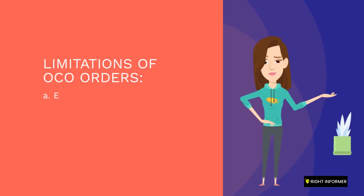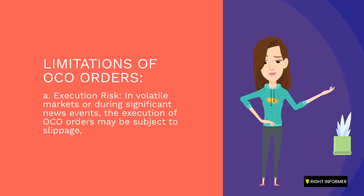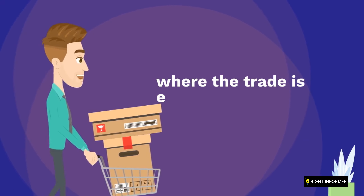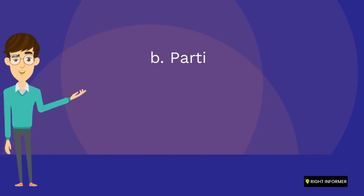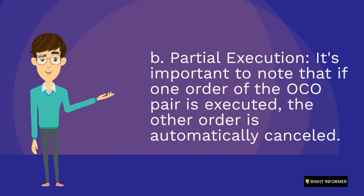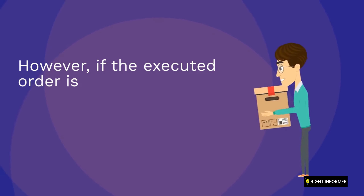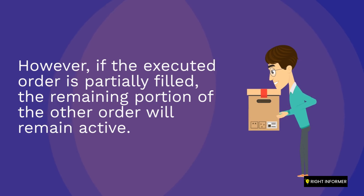Limitations of OCO orders. A. Execution risk: in volatile markets or during significant news events, the execution of OCO orders may be subject to slippage, where the trade is executed at a different price than expected. B. Partial execution: it's important to note that if one order of the OCO pair is executed, the other order is automatically cancelled. However, if the executed order is partially filled, the remaining portion of the other order will remain active.